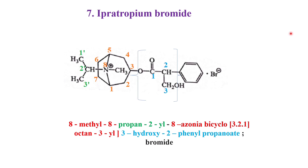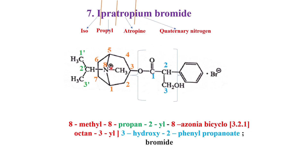We can divide the name of Ipratropium bromide as follows: 'I' indicates iso, 'pro' indicates propyl, so totally isopropyl; 'trope' indicates the presence of atropine; 'ium' indicates quaternary nitrogen. So this is a quaternary nitrogen, and bromide stands for bromide. So that is the structure of Ipratropium bromide.